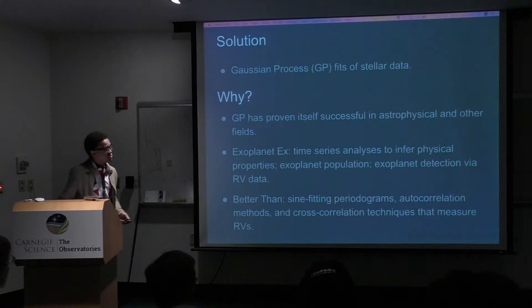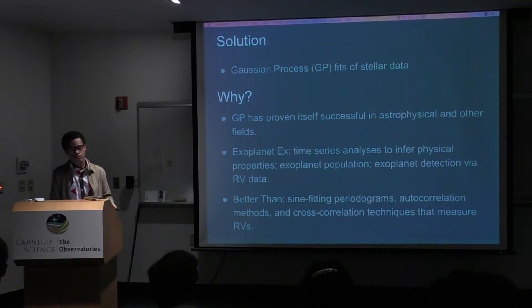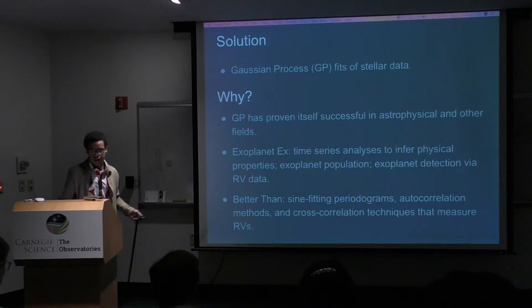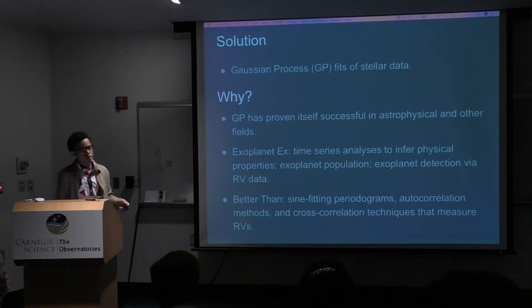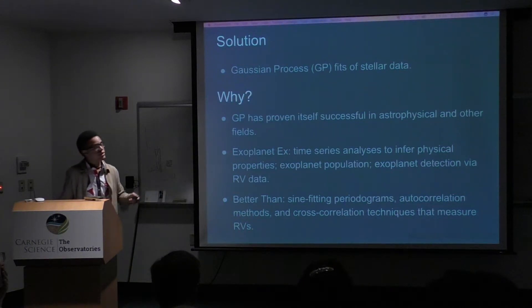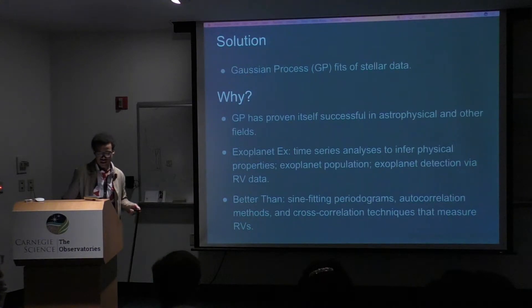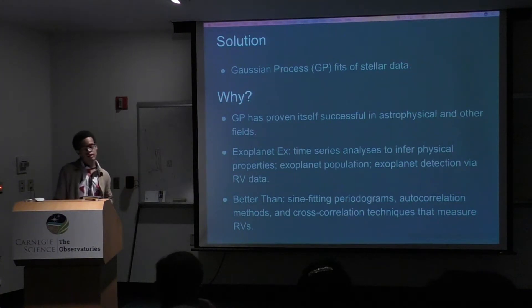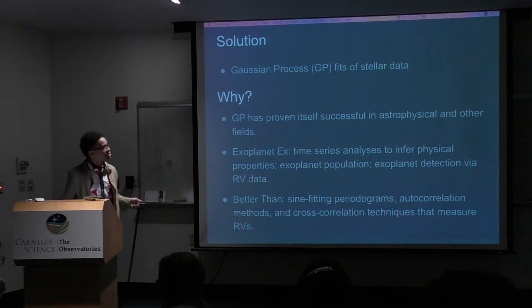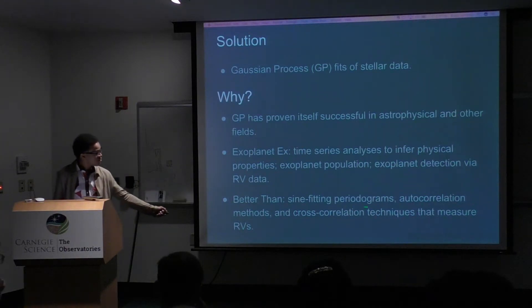With these issues in mind, we have Gaussian processes to help solve that puzzle. GPs have been applied in a variety of fields since the 1880s. However, in terms of astrophysics, they've helped model a variety of things like time delays, rotational periods, binaries, etc. Since 2014, they've become more involved in exoplanetary science, helping to determine physical aspects, population, detections, and transit and RV data. Overall, GPs have actually proven to be better than the alternative methods.